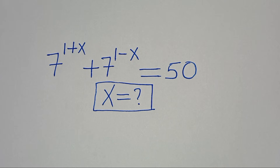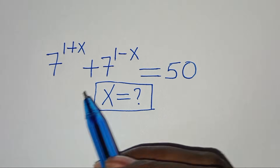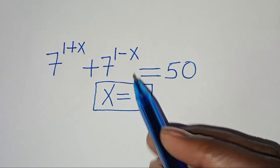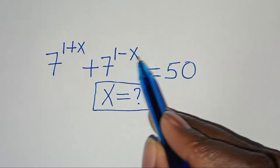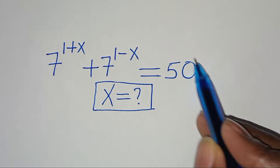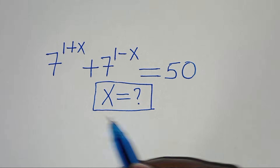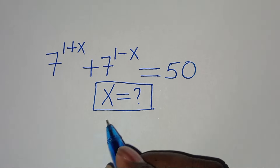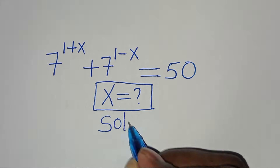You are welcome to solve this nice exponential equation: 7 to the power of 1 plus x, plus 7 to the power of 1 minus x, is equal to 50. So what is the value of x? Now let's provide a solution from here.